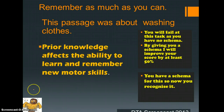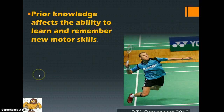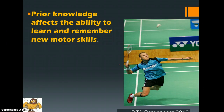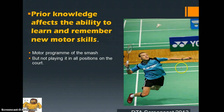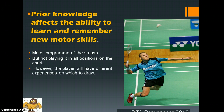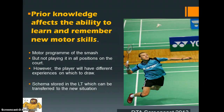So let's put that into a sporting context: prior knowledge affects the ability to learn and remember new motor skills. This player is about to perform a smash — he already has a motor program for a smash, so there is our prior knowledge. He doesn't have a motor program for every different position on the court as Adams would suggest. Instead, the schema theory suggests that because he has experience of how to perform the smash, he can draw on that experience from his long-term memory and transfer it into a new situation.